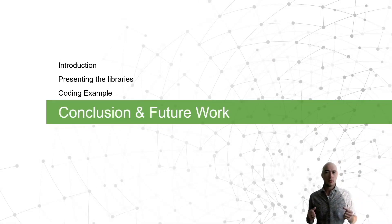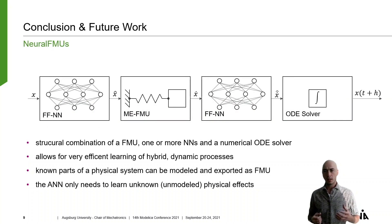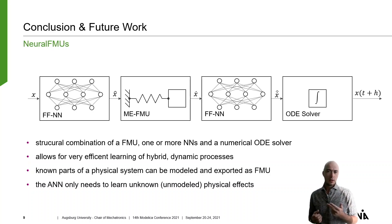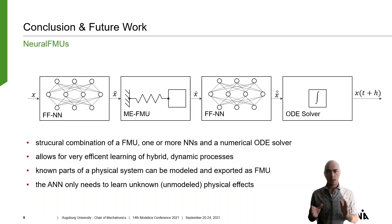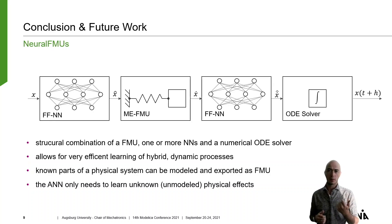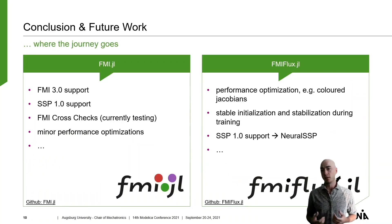To conclude, we presented neural FMUs as the structural combination of one or more typical neural networks, a numerical ODE solver, and an FMU. This setup allows for very efficient learning of dynamic systems, because only the part of the model that isn't already captured by the FMU first-principle model needs to be learned. As with neural ODEs, numerical integration is performed by an ODE solver and not by a recurrent neural network. To bring this concept from theory to life, we provide the two open source libraries: fmi.jl, to import FMUs into Julia, and fmiflux.jl, to build and train neural FMUs. Future work on the libraries includes support for FMI 3, currently under testing.